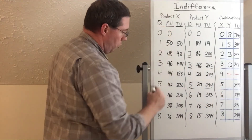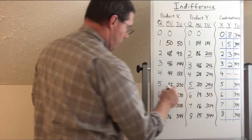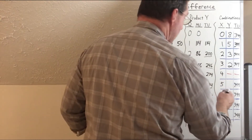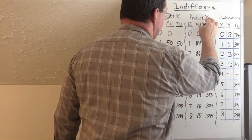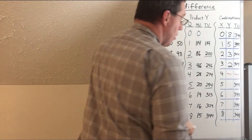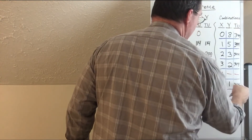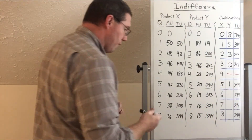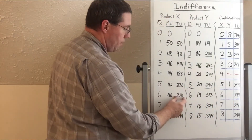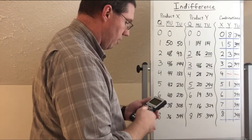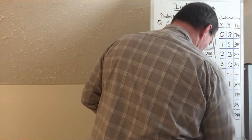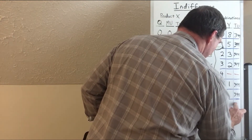Five units of X gives us 230. So 344 minus 230 gives us 114 — and that's exactly one unit of product Y. So five of X and one of Y gives us 344. If we try six of X, that gives us 270, and 344 minus 270 is 74 — there are no units of product Y that give exactly 74. So we blot out six, and seven is also going to be blotted out.